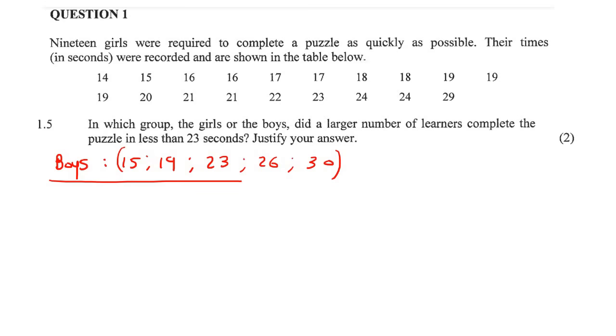So for this next question, I just went and wrote down the boys' five-number summary. So it says, in which group, the girls or the boys? So remember, these are the girls that we looked at in the very beginning. And then the five-number summary here, these are the boys. So in which group did a larger number of learners complete the puzzle in less than 23 seconds, justify your answer?